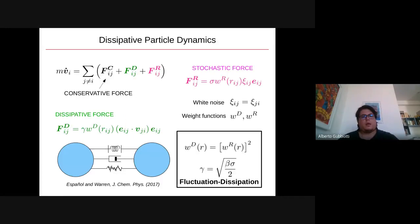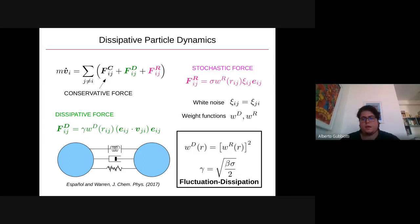Dissipative particle dynamics models the fluid as a set of particles interacting with three different forces: a conservative force, a dissipative force dependent on the relative velocity of the interacting particles, and a stochastic force proportional to a white noise process. The parameters gamma and sigma modulate the intensity of the dissipative and stochastic forces. The weight functions W_D and W_R depend only on the distance between interacting particles and have a cut-off so that only nearby particles interact. The dissipative force and the stochastic force are not independent — they are related by the fluctuation-dissipation relation.